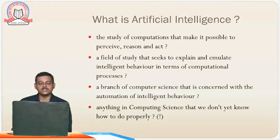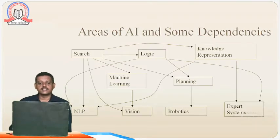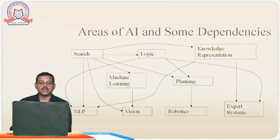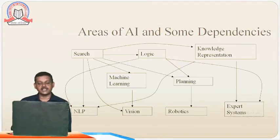So what is meant by AI or artificial intelligence? Today we are going to discuss this. Before that, let us discuss a few areas of AI and some dependencies of AI. As you can see in the diagram, we have search, and search is associated with logic. If we have some logic or knowledge representation, it depends upon that. We have components like machine learning, planning, NLP, vision, robotics, and expert systems — these are the areas of AI and all these areas depend on each other.